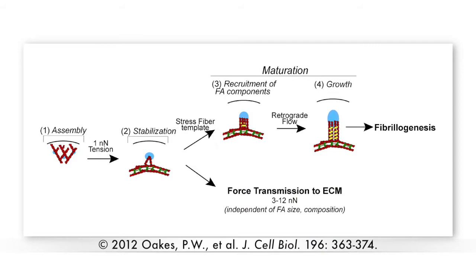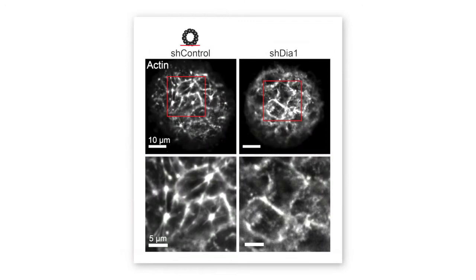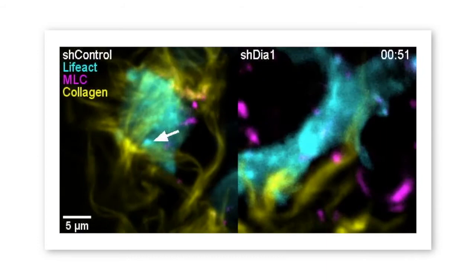Gardel and colleagues have previously shown that DA1 promotes focal adhesion maturation by assembling basal stress fibres that serve as templates for the recruitment of focal adhesion proteins. Accordingly, in the absence of DA1, the basal cortex of MDCK asini contained fewer actin bundles, and myosin puncta corresponding to focal adhesions were much more dynamic.